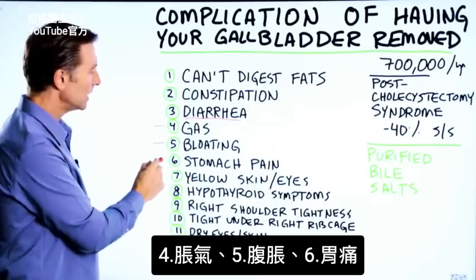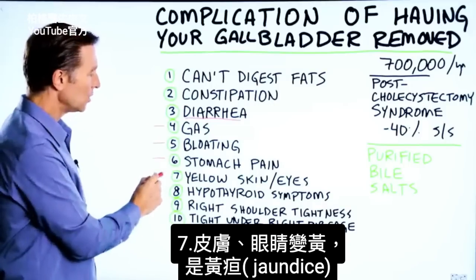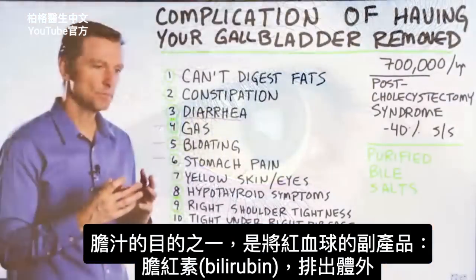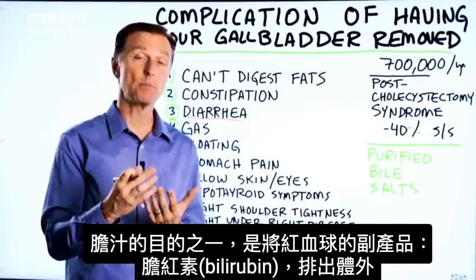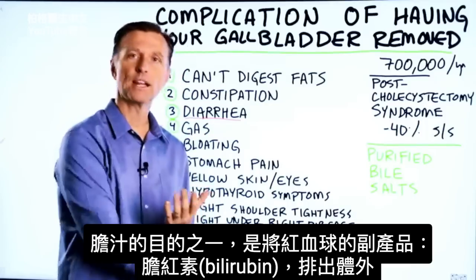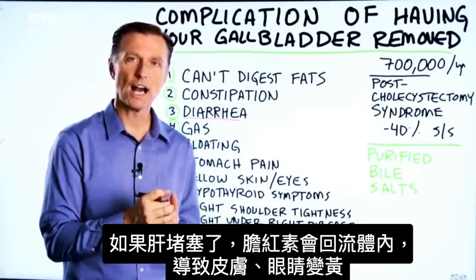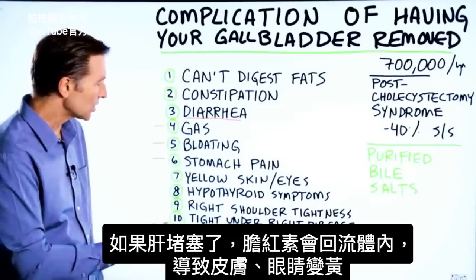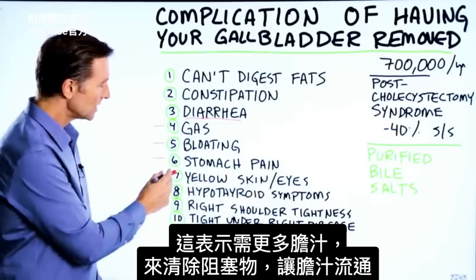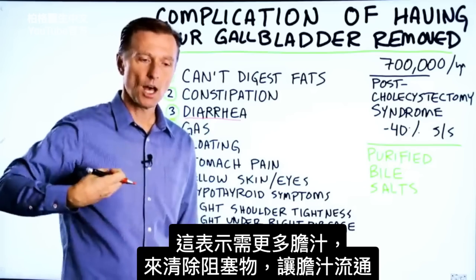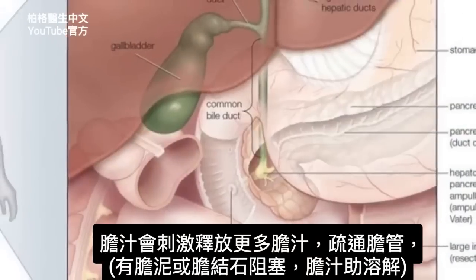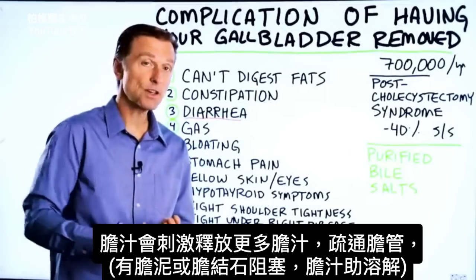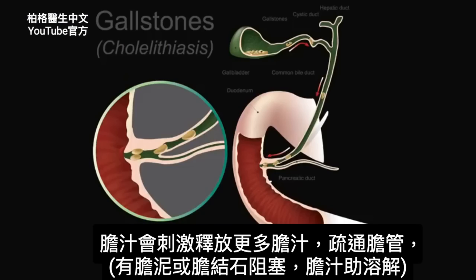We also mentioned gas, bloating, and even stomach pain. You can even experience your skin becoming more yellow or your eyes becoming yellow — that's jaundice. One of the purposes of bile is to take the byproduct of red blood cells, which is bilirubin, and help you eliminate it through the body. So if there's some type of blockage going on in the liver where you're getting a backup of bilirubin, that can come out through the skin and create jaundice. Usually what this means is that you need more bile to help remove the obstruction and allow the drainage. Bile will actually stimulate your own release or flow of bile through the ducts.